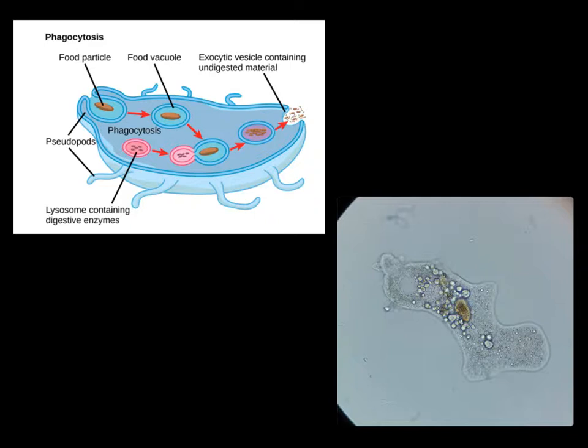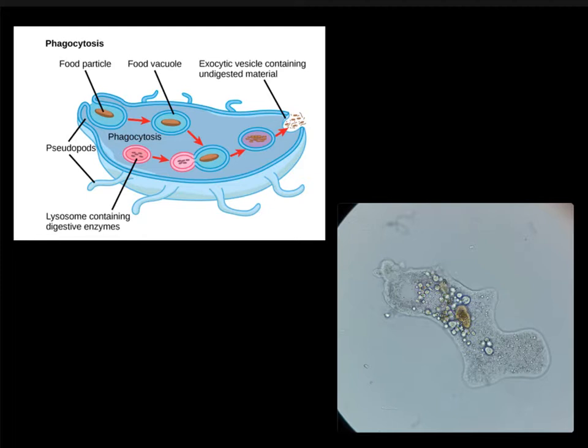Here we have our amoeba again. You can see all the different organelles. It's going to send out the pseudopodia — the false foot. Let's say there's a piece of food right here; it's actually going to engulf that food particle. This false foot goes one way, and this false foot goes the other way, and it engulfs the food particle. That's phagocytosis, which you read about last week.